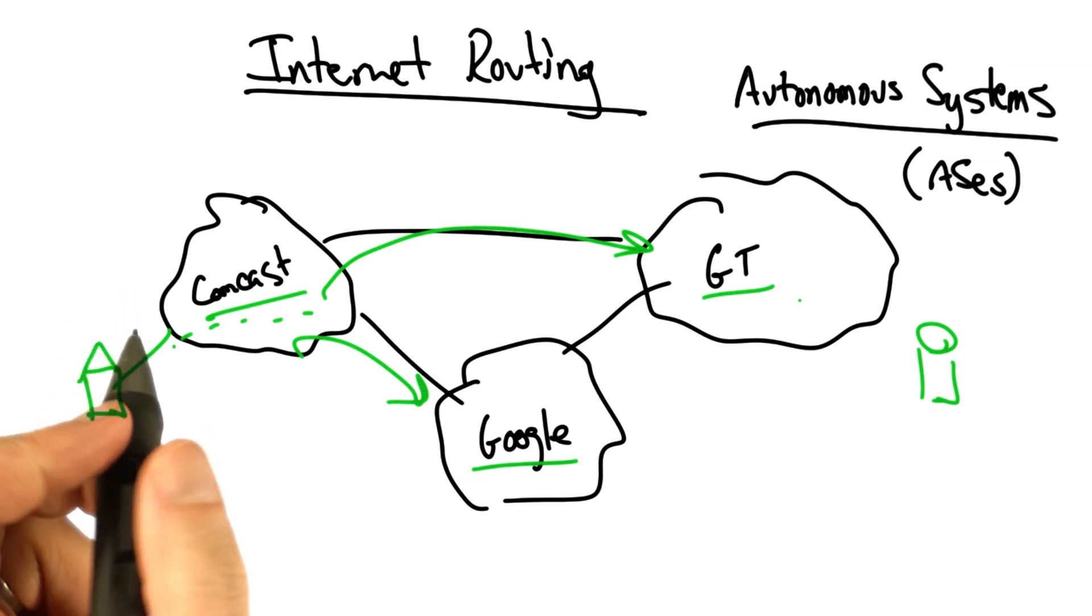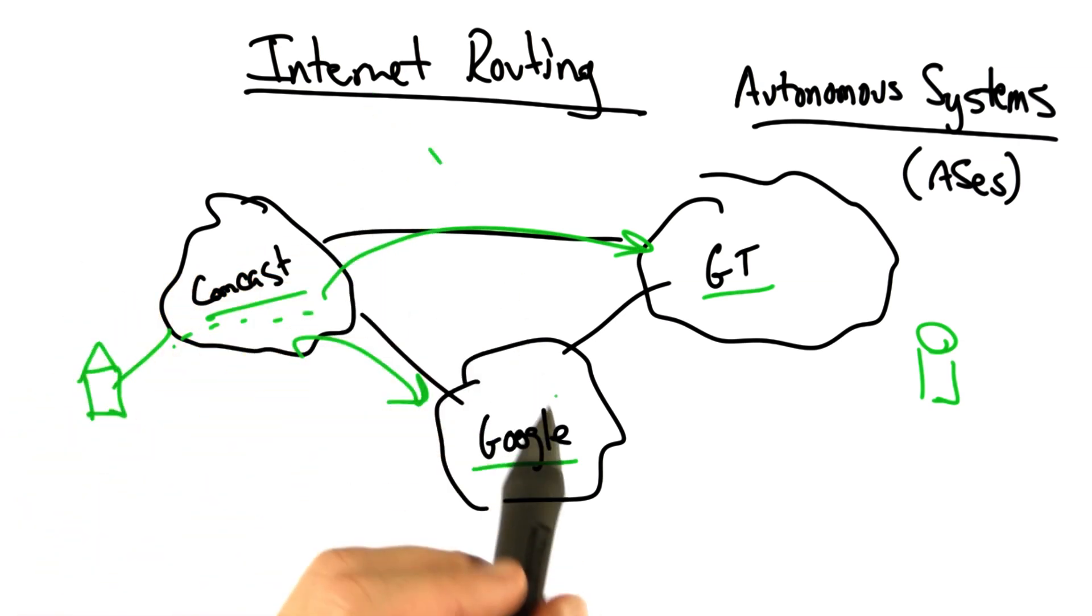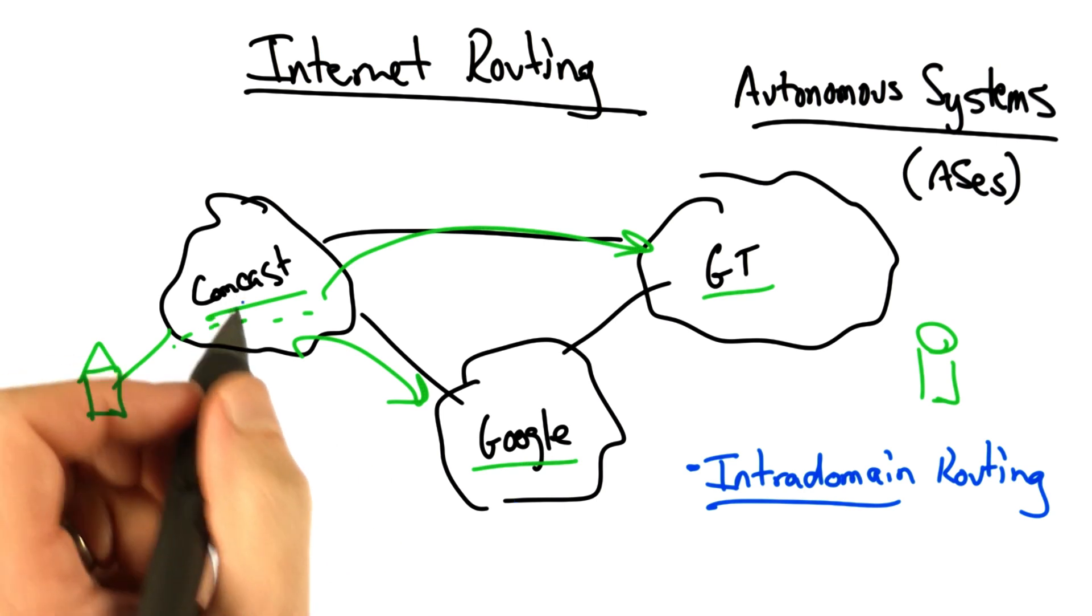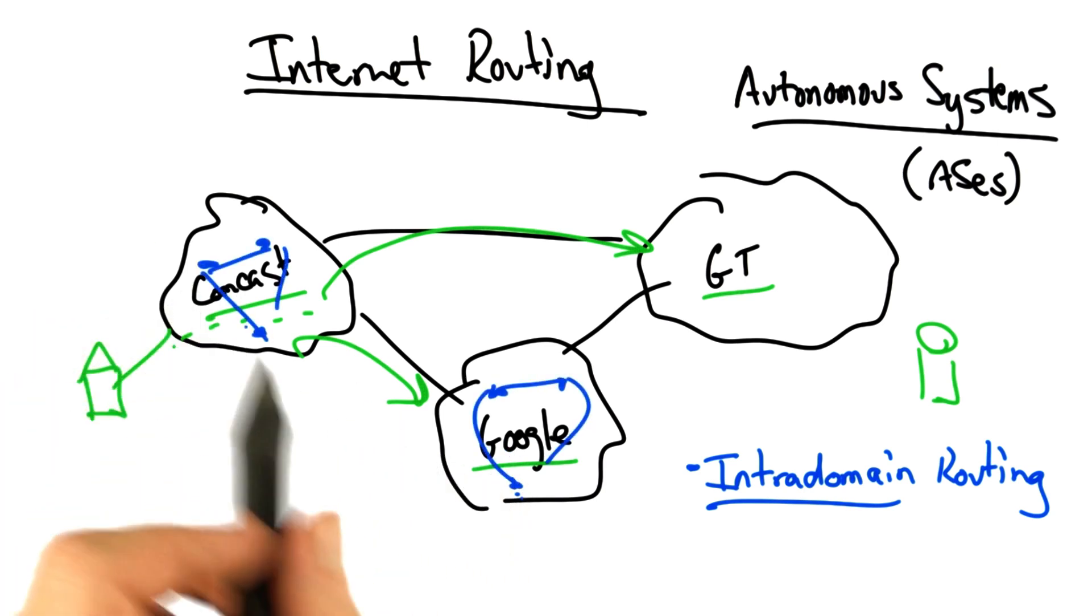This process of internet routing actually involves two distinct types of routing. One is intradomain routing, which is the process by which traffic is routed inside any single autonomous system.